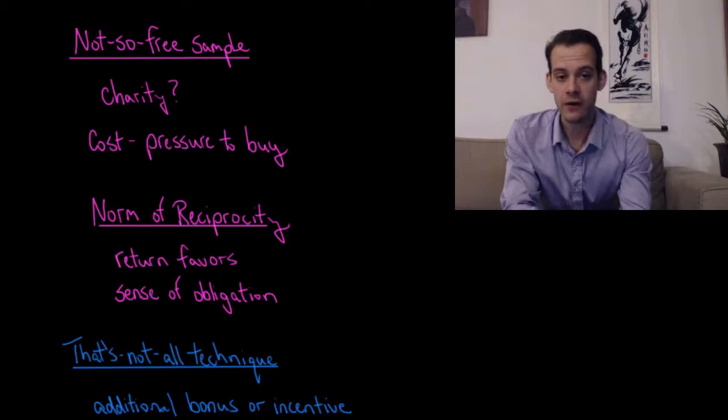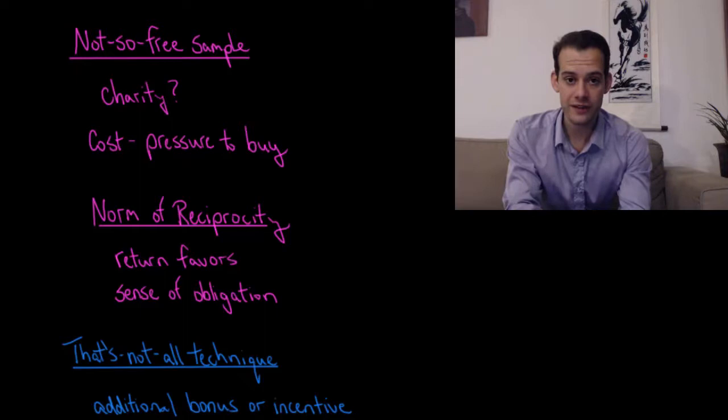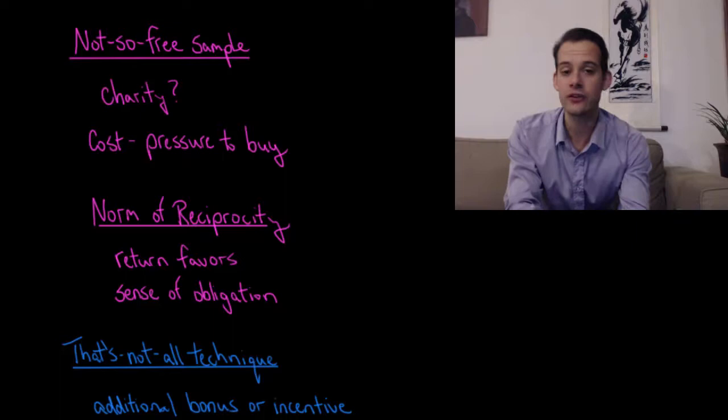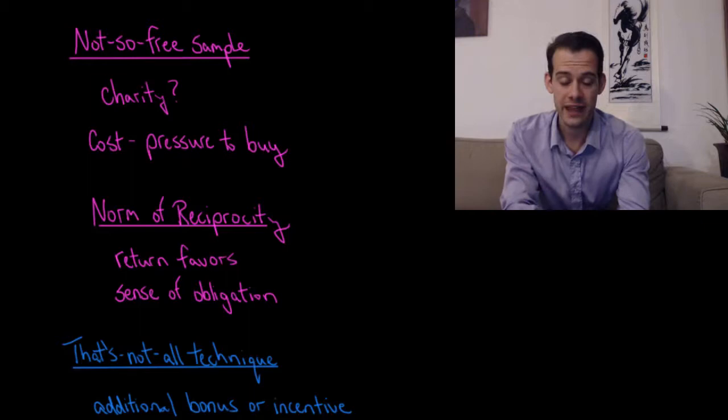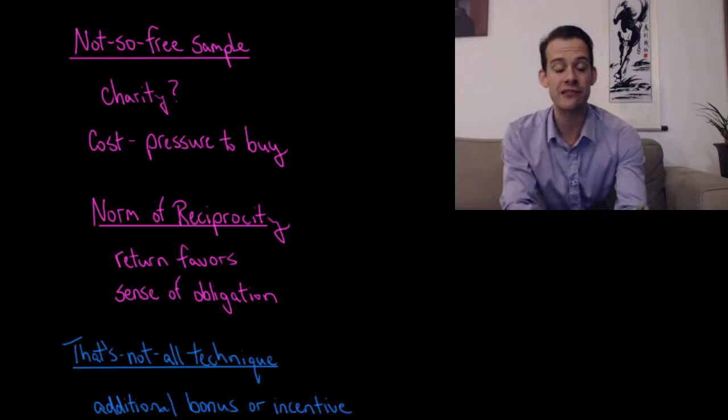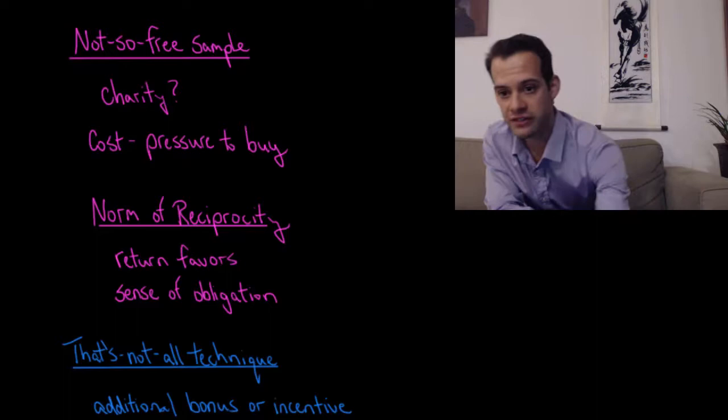This norm of reciprocity can also be applied to understanding the door-in-the-face technique because with this very large request that's now been reduced, we get the sense that the other person is willing to negotiate, they're willing to compromise. They're doing something for us. They're saying okay well if you can't do this really large request I'm willing to lower my request. And what you should then feel because of this norm of reciprocity is that you should increase what you're willing to do. They're willing to compromise and negotiate, you should be willing to compromise and negotiate as well.